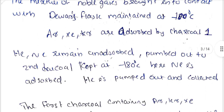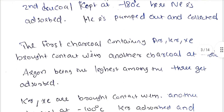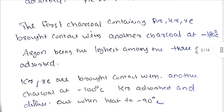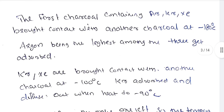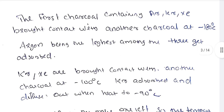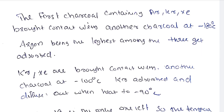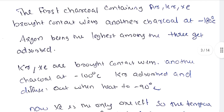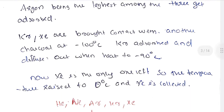The first charcoal contains argon, krypton, and xenon. This is brought into contact with a third charcoal at minus 180 degrees Celsius. Argon, being the lightest among the three, is absorbed first. Krypton and xenon are then brought into contact with another charcoal at minus 100 degrees Celsius.